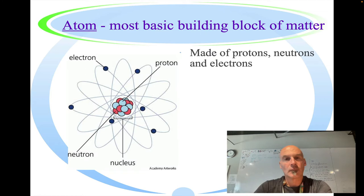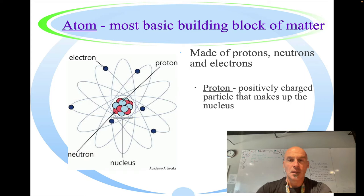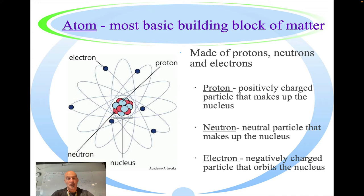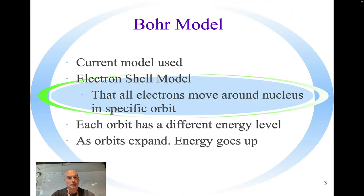So the atom itself is made out of protons, neutrons, and electrons. The proton is a positively charged particle that makes up the nucleus. The nucleus is in the center of the atom. A neutron is a neutral particle that also is found in the nucleus. The electron is the negatively charged particle that is orbiting, zinging around the nucleus.